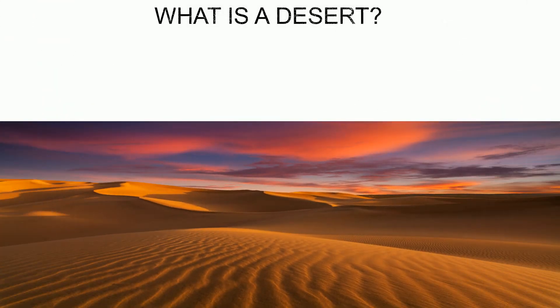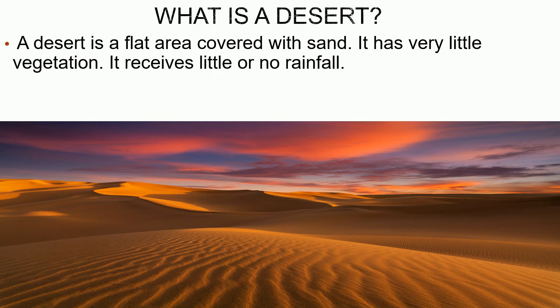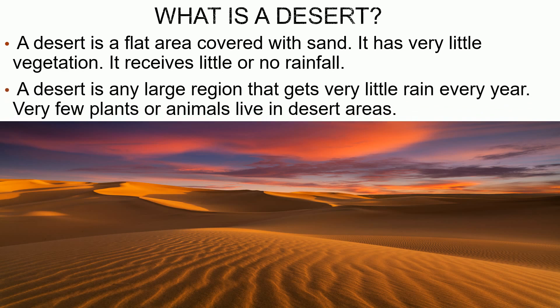Now, let's learn what is a Desert. A desert is a flat area covered with sand. It has very little vegetation. It receives little or no rainfall. A desert is any large region that gets very little rain every year. Very few plants or animals live in desert areas.